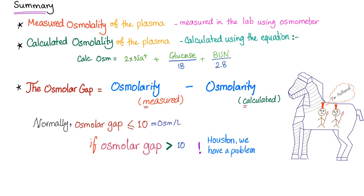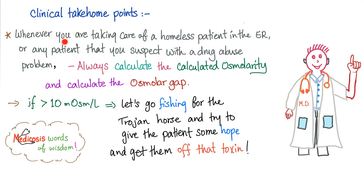Summary: measured osmolality is measured using the osmometer; calculated osmolality is calculated using the equation depending on the big three; the osmolar gap equals measured minus calculated; normally less than 10, and if more than 10 there are foreign substances in your body. Clinical take-home point: whenever you are taking care of a homeless patient in the emergency room or any patient you suspect of drug abuse or drug use, always calculate the osmolar gap — measured minus calculated. Don't just depend on the measured osmolality from the lab. If more than 10, go fishing for the Trojan horse and get the patient off that toxin.